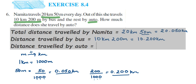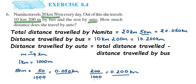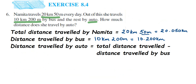Now we find the distance traveled by auto. From the total distance we subtract the distance traveled by bus to get the answer. So we have to subtract these two decimal values: 20.050 kilometers minus 10.200 kilometers.